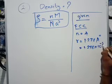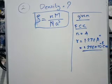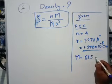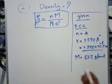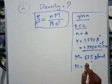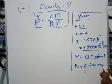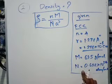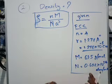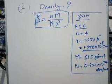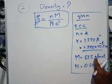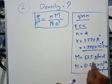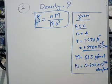The atomic radius is 1.278 into 10 raised to minus 8 centimeters. The molecular mass, that is the atomic weight, is 63.5 grams per mole. Avogadro's number is 6.023 into 10 raised to 23 atoms per mole. The number of atoms in one mole is Avogadro's number. One mole is 63.5 grams weight. So for one atom, the weight is molecular mass divided by Avogadro's number.